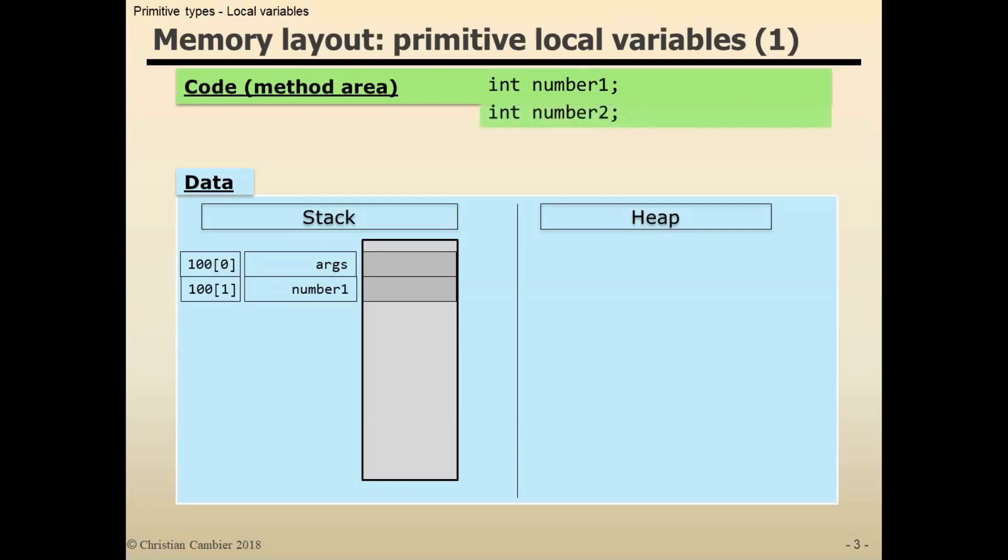When I declare int number2, what happens? A similar story as with number1, but at a subsequent position in the local variables array, at position with index 2, the third element.